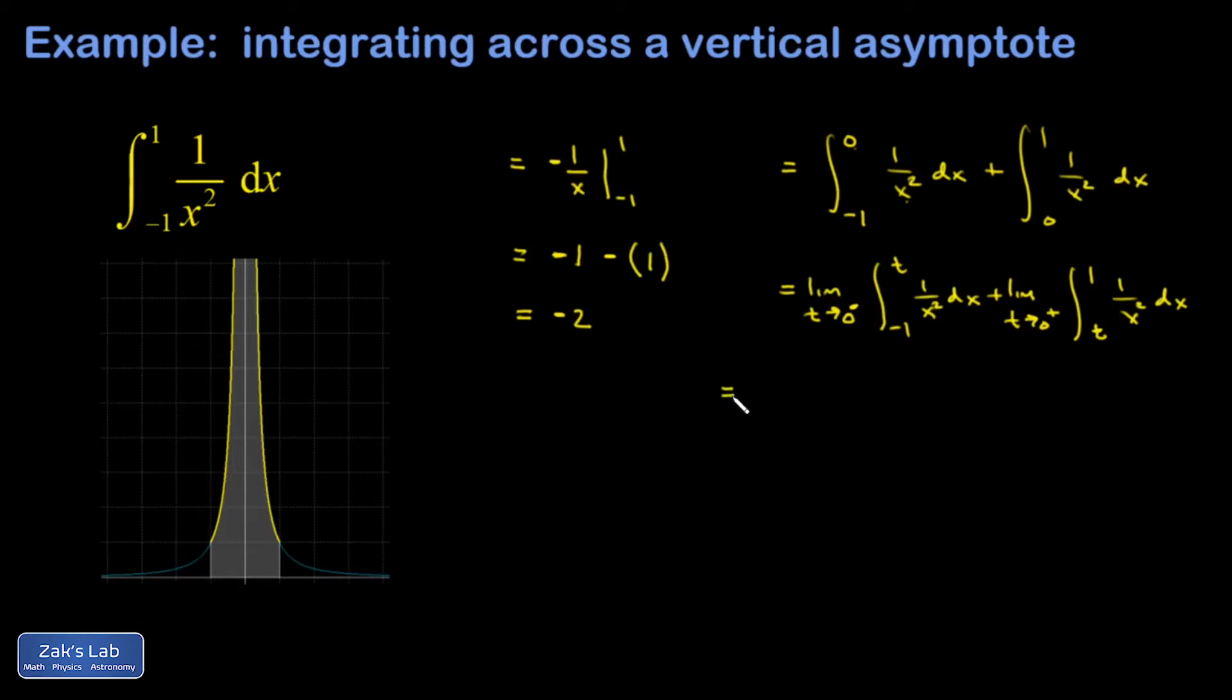Guessing the antiderivative is just the same as before. I get negative 1 over x for that. In the first one, I have the limit as t goes to 0 from the left, negative 1 over x evaluated from negative 1 to t. Then I have plus limit as t goes to 0 from the right, negative 1 over x evaluated from t to 1.